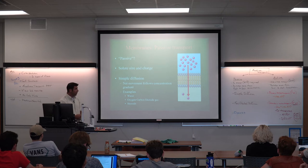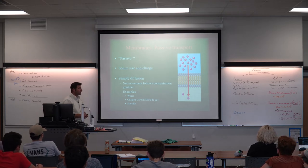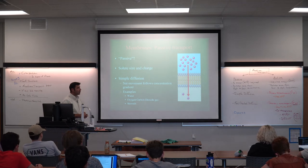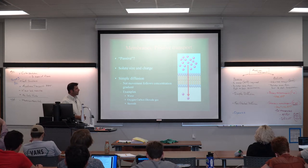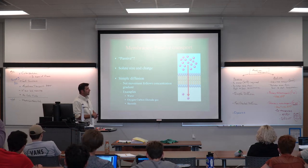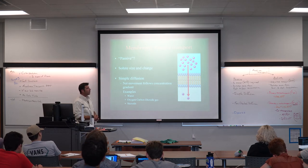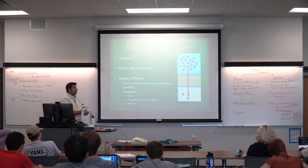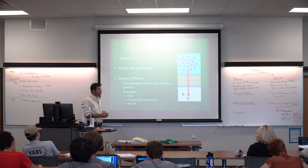Here is an example of passive transport — we can see particles going from an area of high concentration down towards an area of low concentration. It doesn't even tell us what these particles are; we can just see they're going down their concentration gradient, spreading out. These happen to be crossing a membrane, so it qualifies as a type of membrane transport.